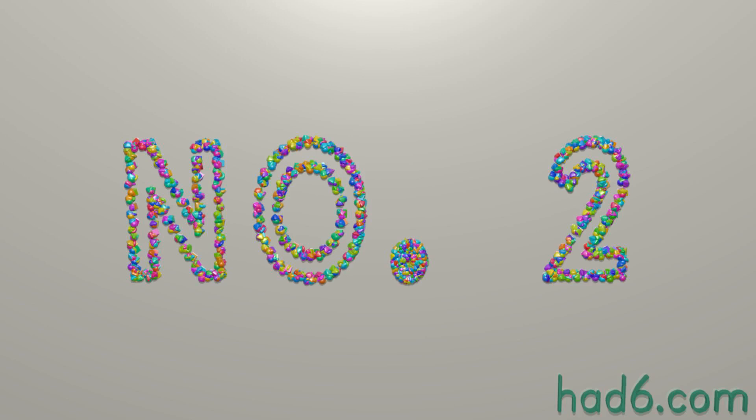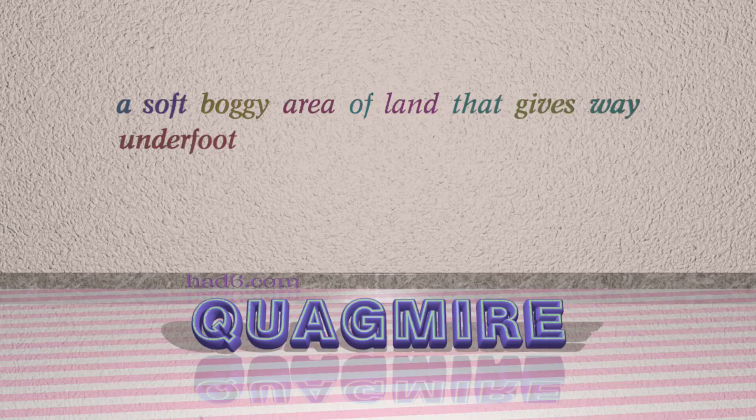Number 2: Quagmire. Which means a soft boggy area of land that gives way underfoot.